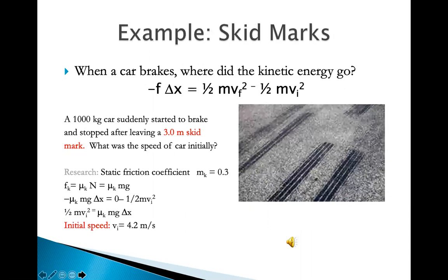Here's one example, the skid mark on the road. So when a car brakes, where did the kinetic energy go? Well, the kinetic energy is reduced to zero because when the car stops, the final kinetic energy is zero. And the change, this is a much simplified model, equals to the friction times the displacement. The negative sign means friction and the displacement are along opposite directions. So cosine 180 degree is a negative one.